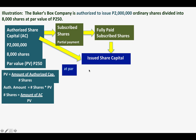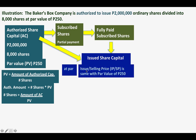You can issue shares in two ways. First, issue it at par — meaning the issue price or selling price equals the par value. We will use IP for issue price and SP for selling price. If shares are issued at par, we are selling them at 250, which is the par value. We can also issue shares above par, meaning the issue or selling price is more than the par value. For example, if the issue price is 275, that is above par.